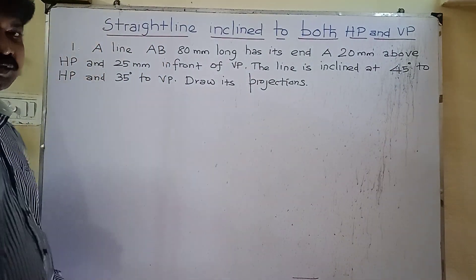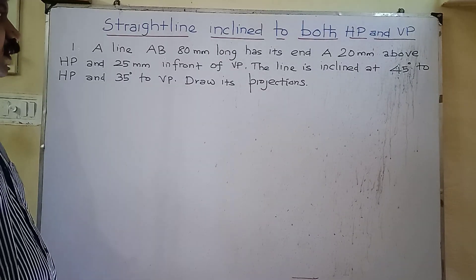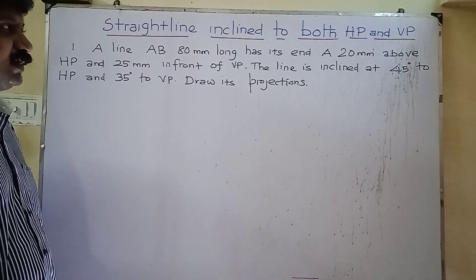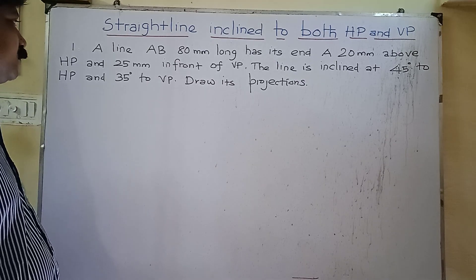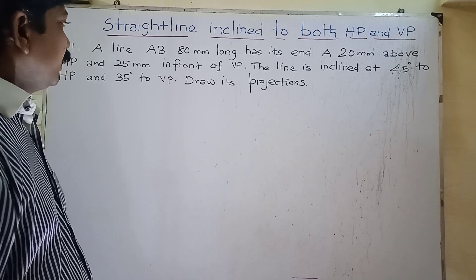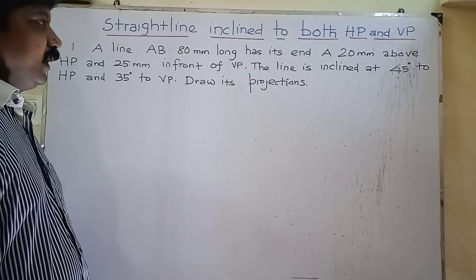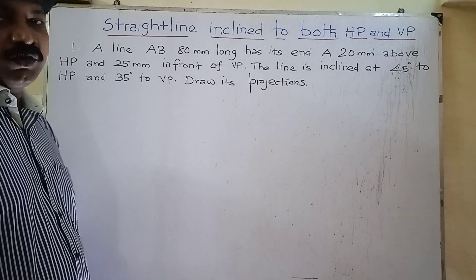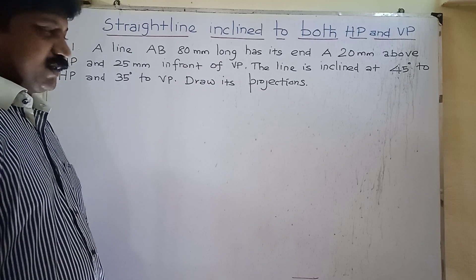Consider this question. A straight line AB, 80mm long, has its end A 20mm above HP and 25mm in front of VP. The line is inclined at 45 degrees to HP and 35 degrees to VP. Draw its projections.